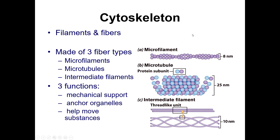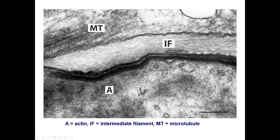The cytoskeleton consists of filaments and fibers that hold everything in place. There are three different types: filaments, tubules, and intermediates. These do different things — they support proteins, anchor organelles to the wall, or help move substances around. Here is an actual microscope image showing the different filaments and microtubules.